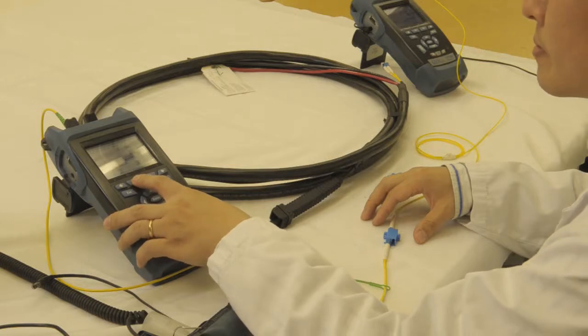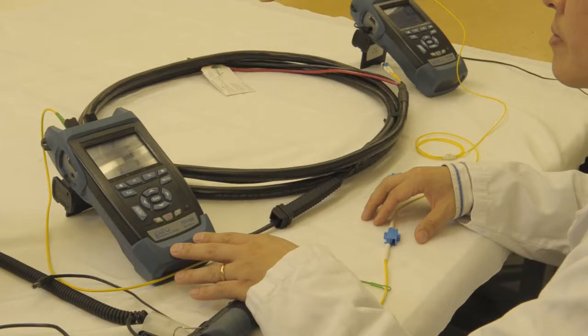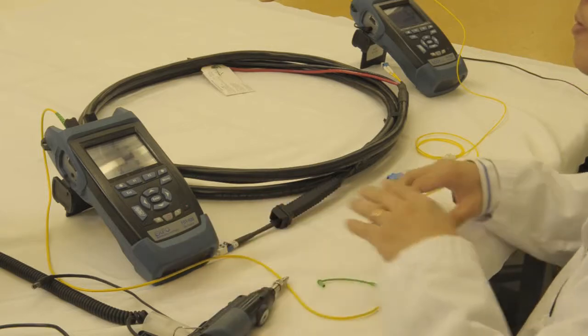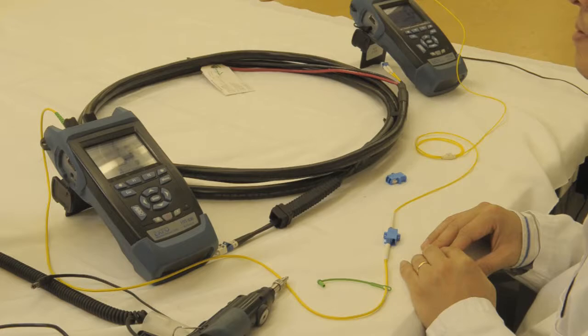So right now we're going to go ahead and reference the meter. Here, this is the fast test and we want less than a dB for our reference. We're at 0.27 at 1310 and we're at 0.45 for 1550, so that's good to go.